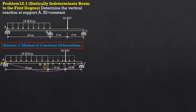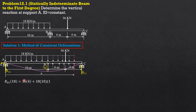Considering the entire system first: RA1 — summation of moments about C equals 0 — so RA times 18 equals 36 times 4 plus 18 times 10, and 5 plus 8 is 13 for the moment term. Solving for RA1 for the determinate case: RA1 equals 138 kilonewtons. We then section this part and set up the equation of the elastic curve.